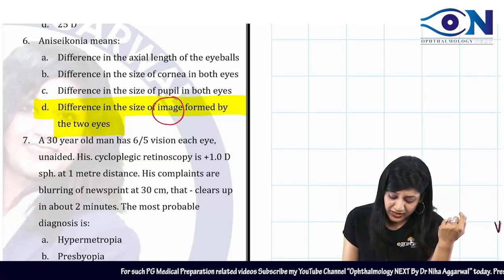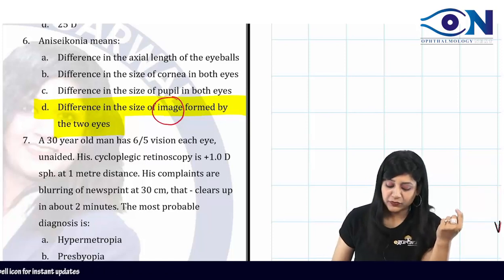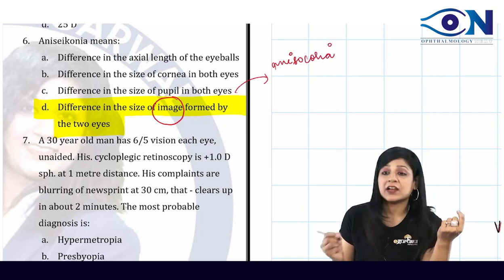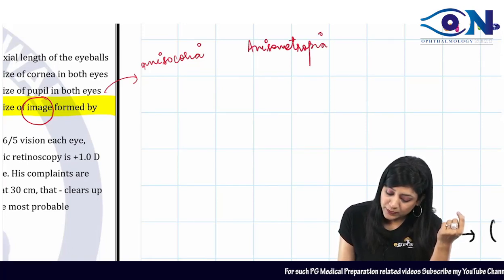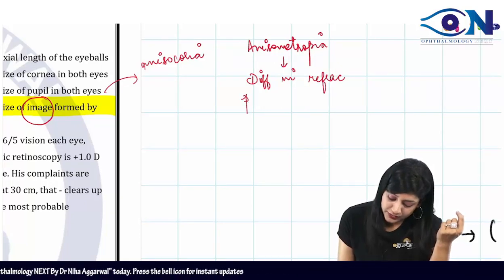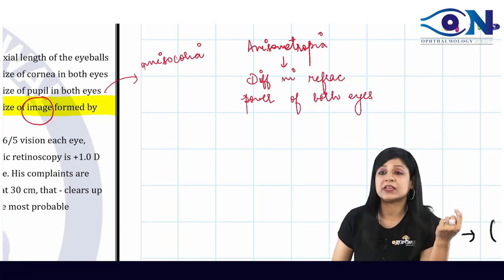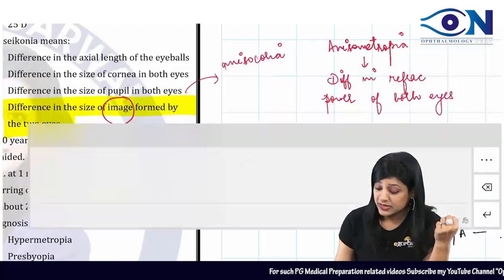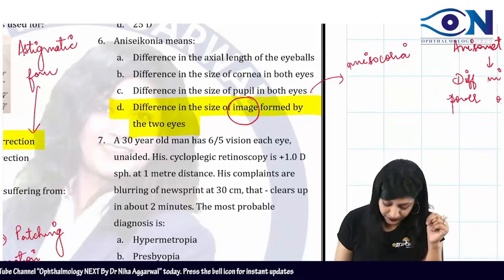Question 6: Anisoconia is a difference in the size of images formed by both eyes. Anisometropia is the difference in the refractive power of both eyes. Anisocoria refers to difference in the size of the pupil. So to clarify: difference in size of images is anisoconia, difference in refractive power of both eyes is anisometropia, and difference in pupil size is anisocoria.